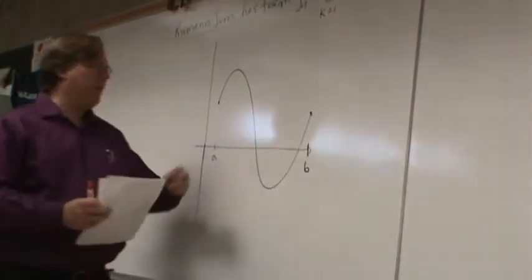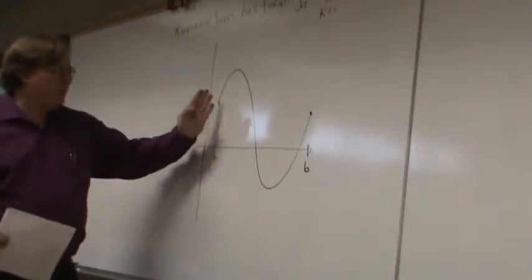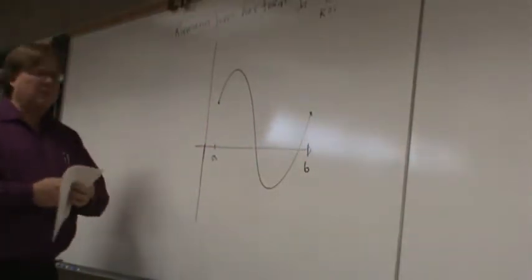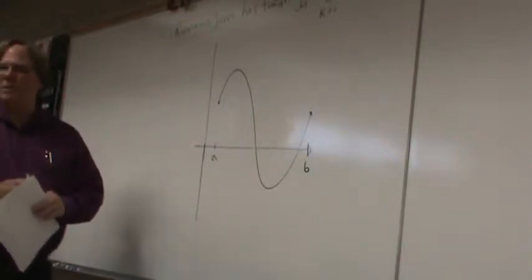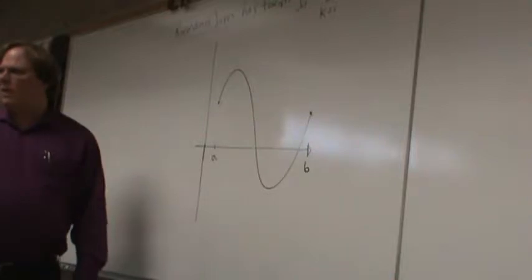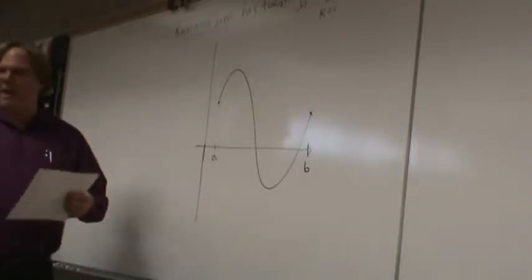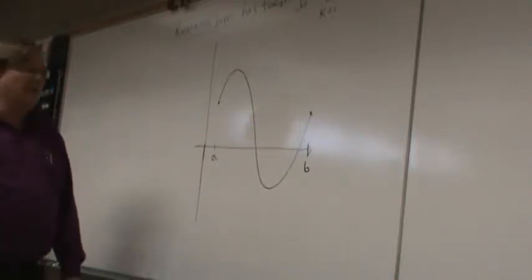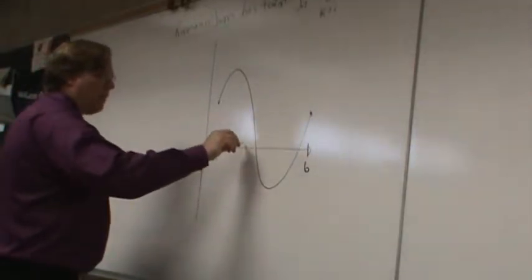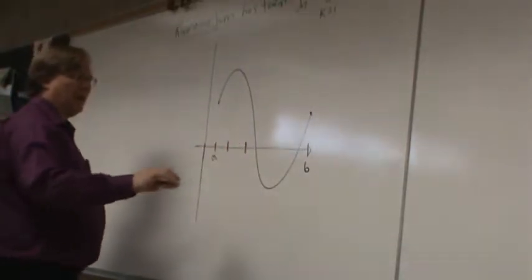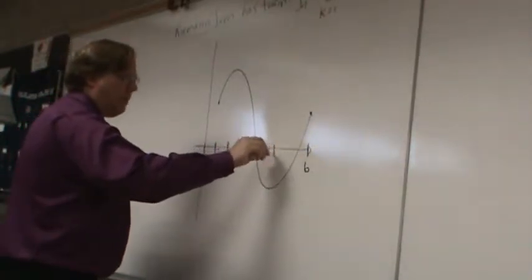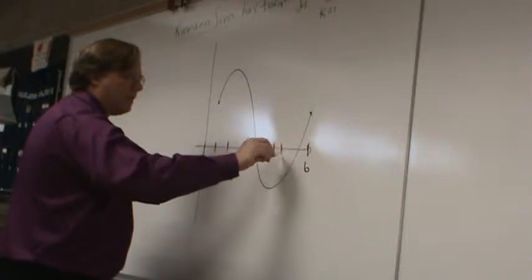The area between the graph and the x-axis from A to B. What I'm going to do is create a bunch of partitions. On the previous homework assignment all our partitions had the same width, but in real life partitions don't have to have the same width. I've made seven partitions of varying lengths.